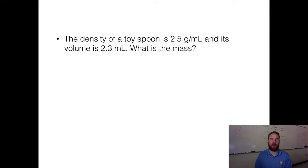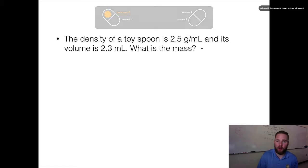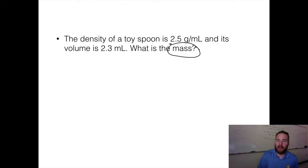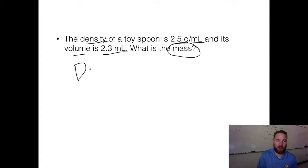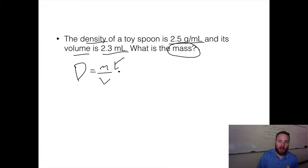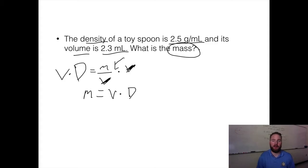Next problem: the density of a toy spoon is 2.5 grams per milliliter and its volume is 2.3 milliliters. What's the mass? Circle what we're finding — mass. Underline what's given: density = 2.5 g/mL and volume = 2.3 mL. Our original equation is density equals mass divided by volume, but we're solving for mass. Algebraically, multiply both sides by volume — volume cancels — and we get: mass equals volume times density.